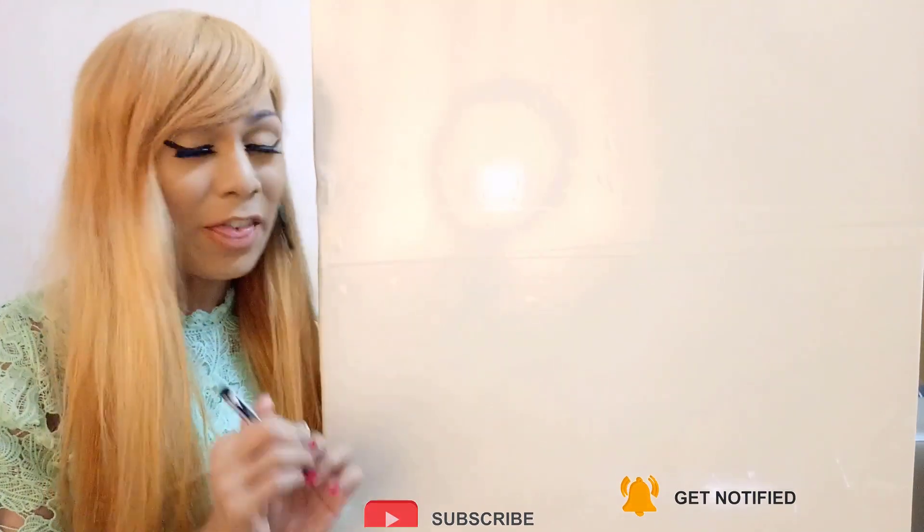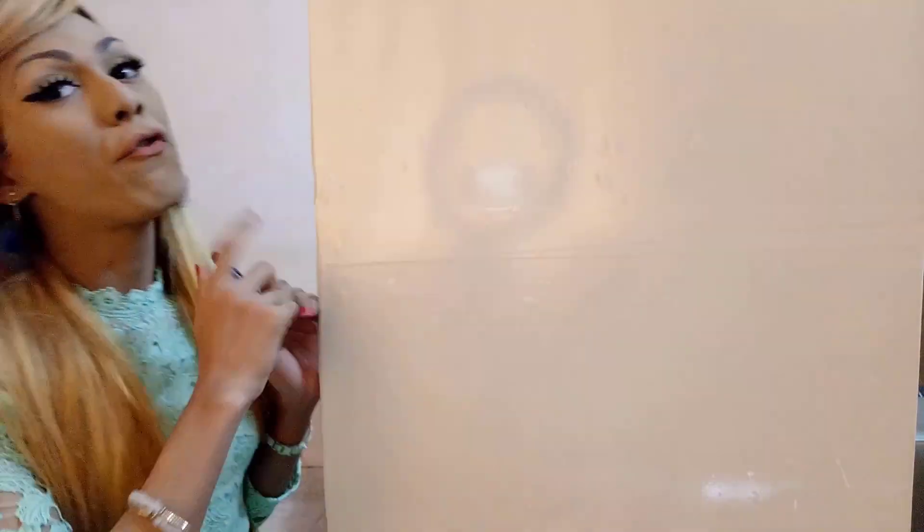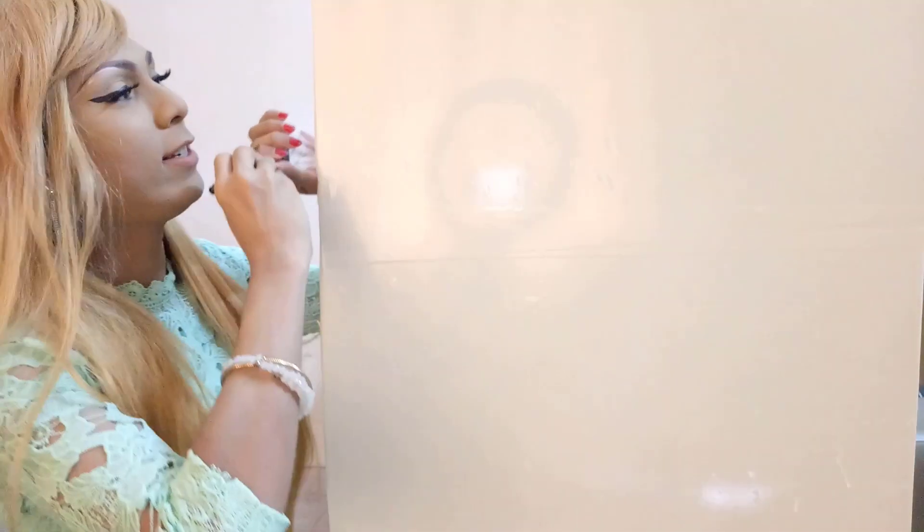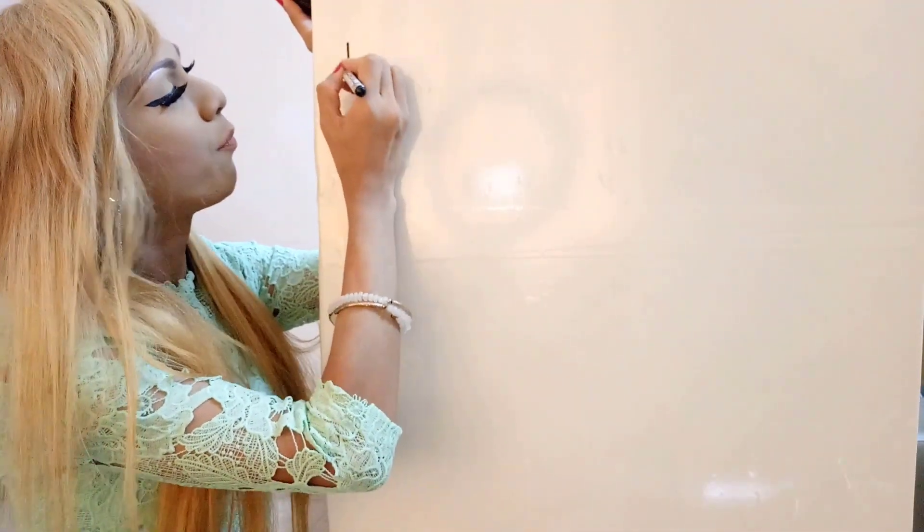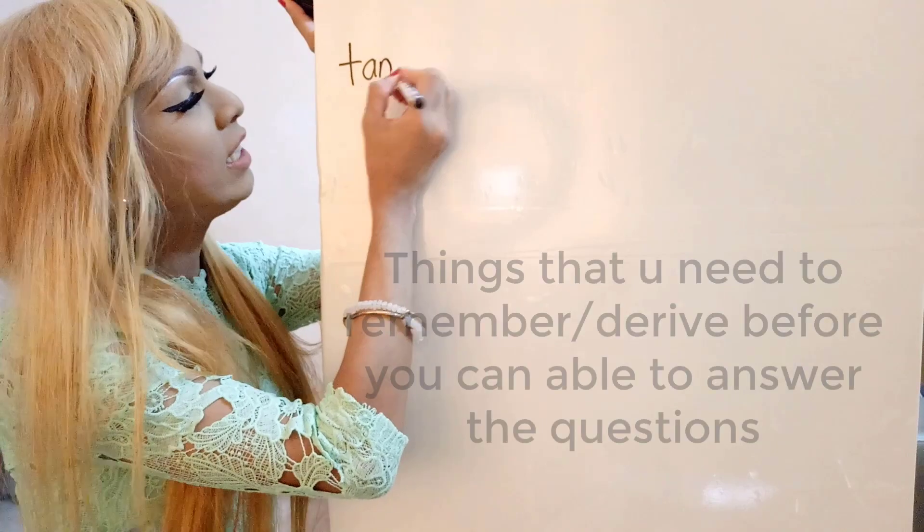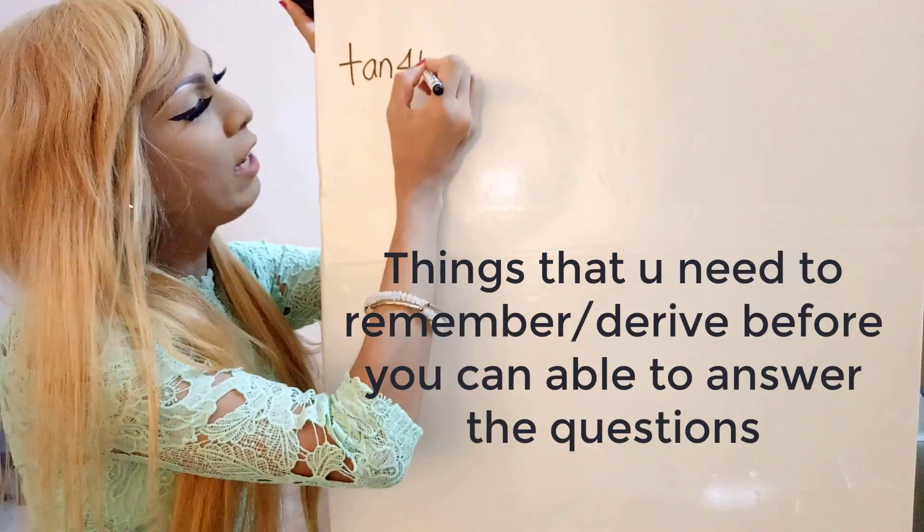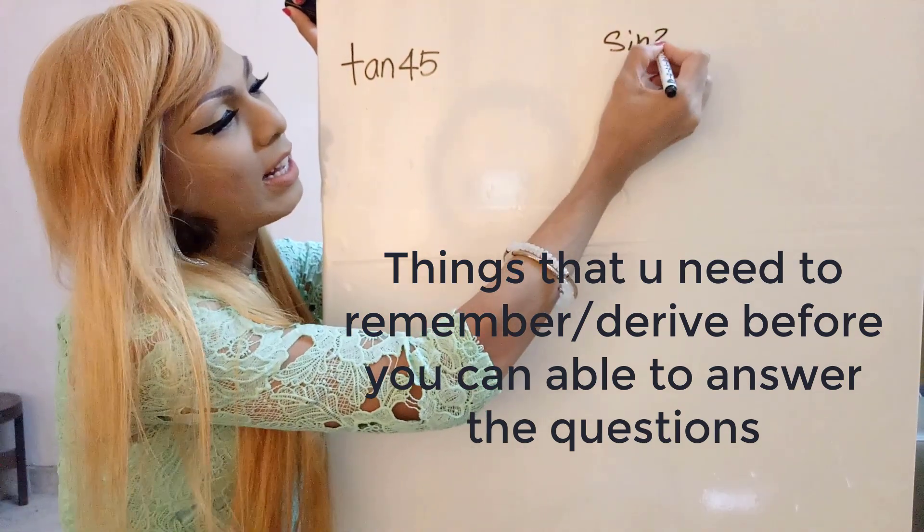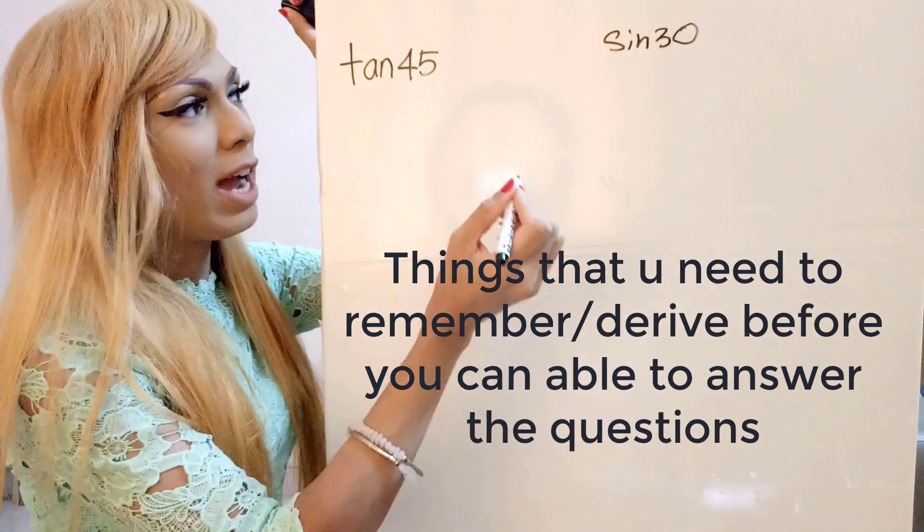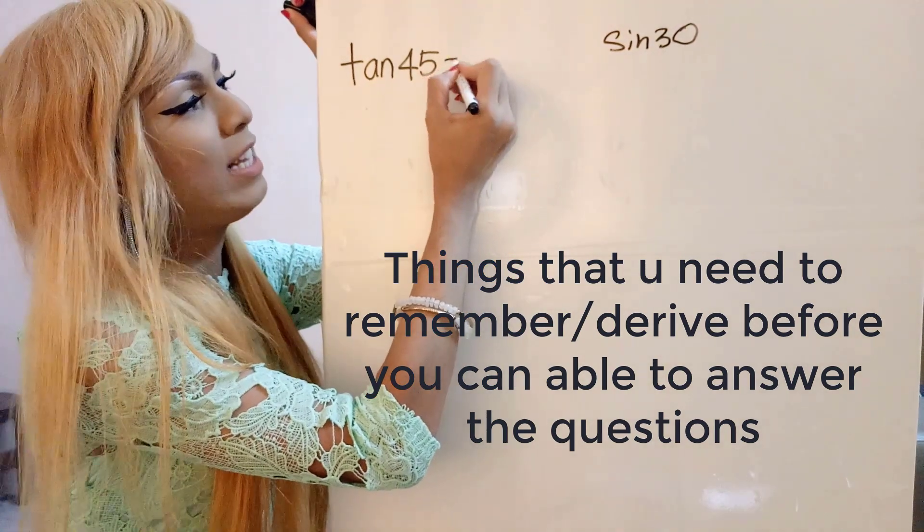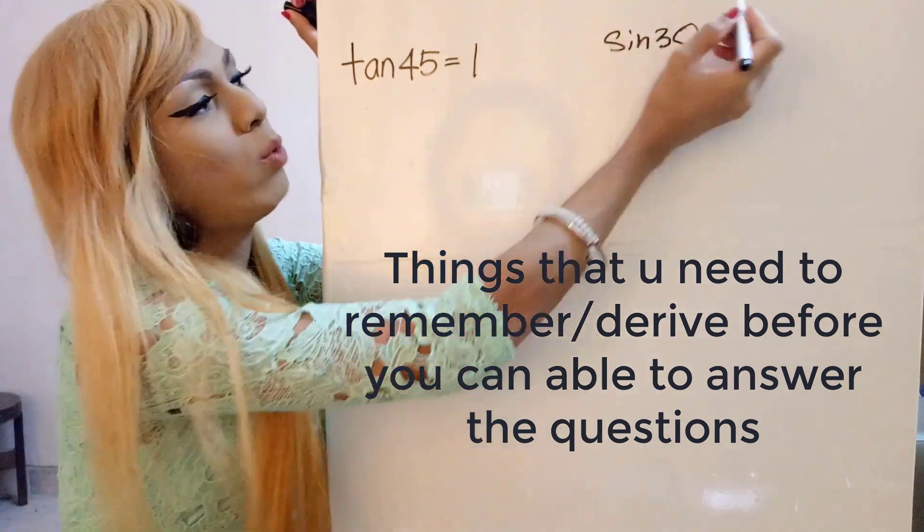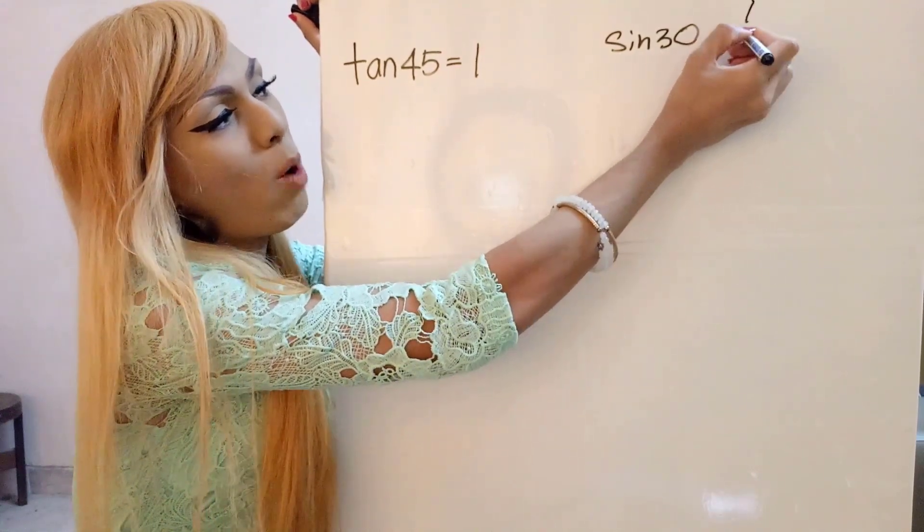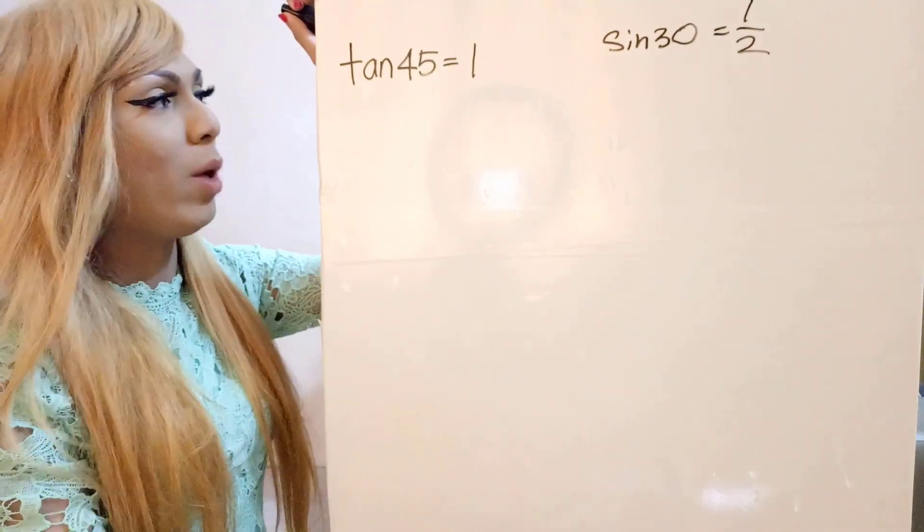In order to answer this question, first, you guys need to remember two values: tangent 45 and also sine 30. You guys need to remember that tangent 45 is equivalent to 1 and sine 30 is equivalent to 1 over 2.